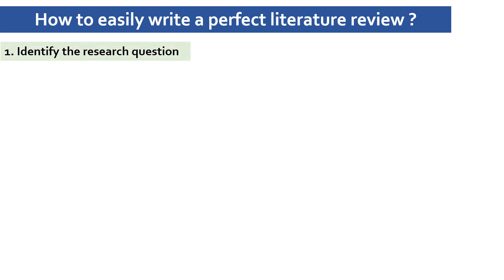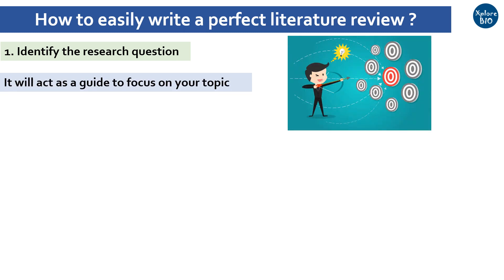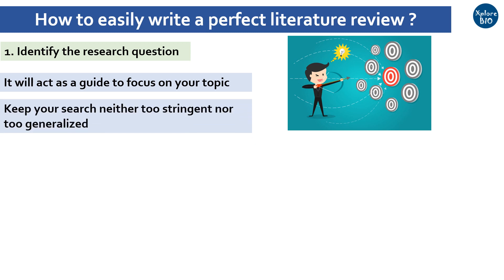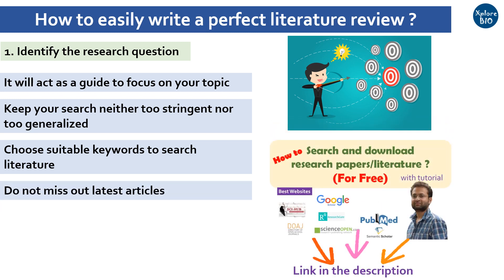Step one is to identify a research question and topic you want to explore and write about. This will help you stay focused and act as a guide to search only the relevant literature, saving your time from reading articles that are not important to you. Do not over-generalize your search, but also do not make it too stringent so as to miss important resources. Choose the right keywords and try different keyword combinations when you search. Make sure you do not miss out on the latest literature.